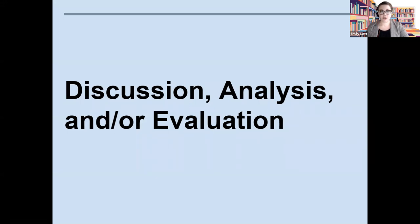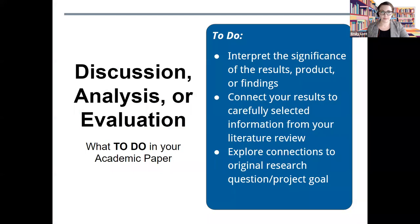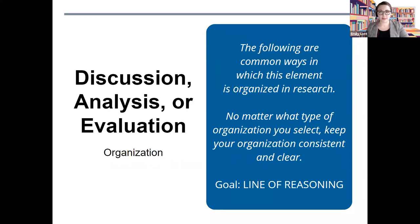Once you have discussed your findings, you will need to begin your analysis. In multiple fields, this element and the results element are synthesized together, and that's totally fine — just make sure you do not omit one element in the attempt to create the other. Once you've explained your preliminary results, you will need to slow down and build a line of reasoning that will support an answer to your research question. This means you need to interpret the significance of results, connect your results to carefully selected information from your literature review, and explore those connections to your original research question and project goal. Where can you go to observe how your analysis can be constructed? If you guessed the scholarly works from your literature review or community of practice, you're right.